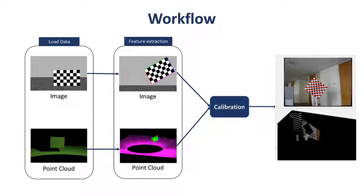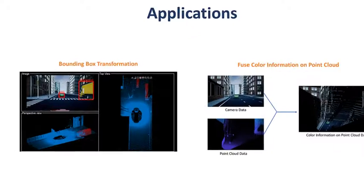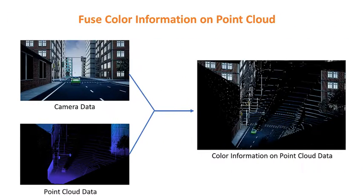You can follow the same workflow for LiDAR camera calibration on real data. This can be further extended for different applications like estimating coordinates of 3D bounding boxes in LiDAR data from 2D bounding boxes in the corresponding image and fusing color information from camera on point cloud data.